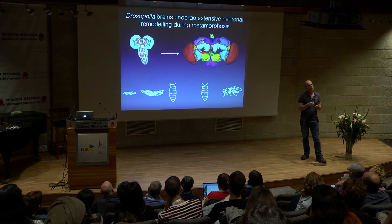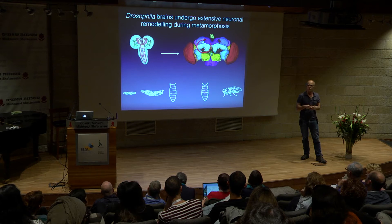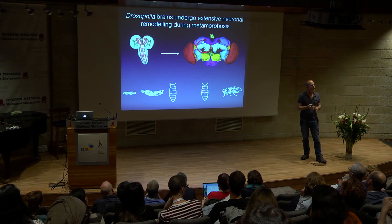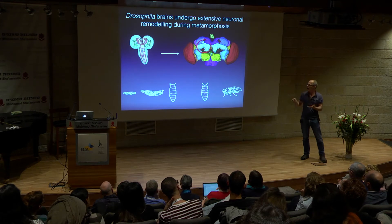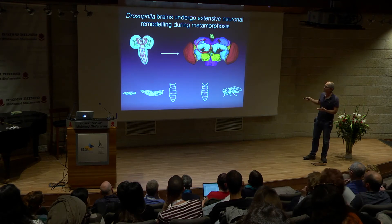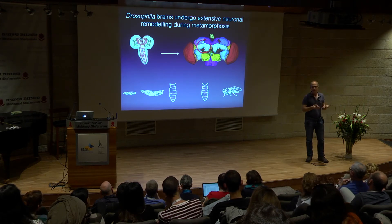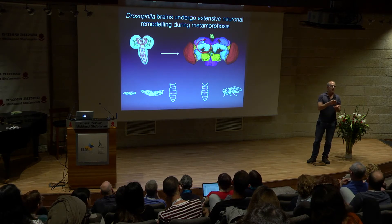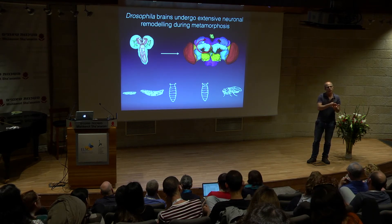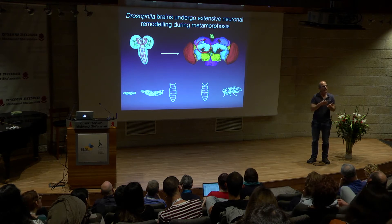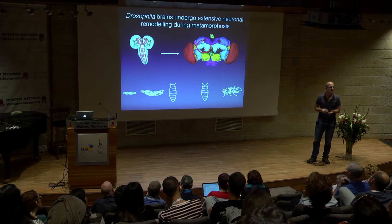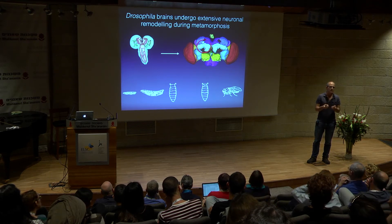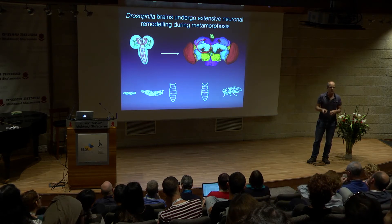Most of my lab is interested in one cellular structure called the mushroom body, which is important for learning of olfactory stimuli. This structure is comprised of three different neuronal types that are sequentially born from four identical neuroblasts, or stem cells, per hemisphere. Notably, only the neuron born first undergoes neuronal remodeling; the second neuron, despite existing during metamorphosis, does not undergo remodeling—suggesting that this process is cell-type specific.